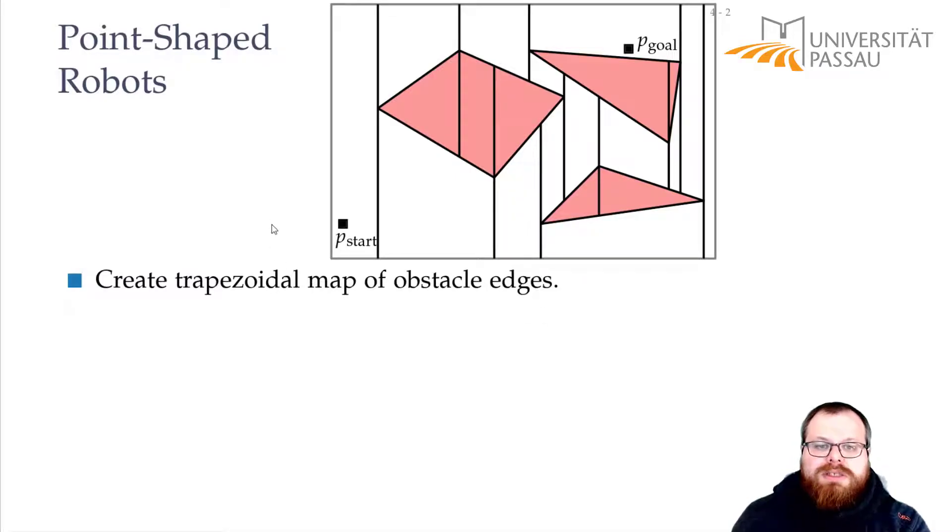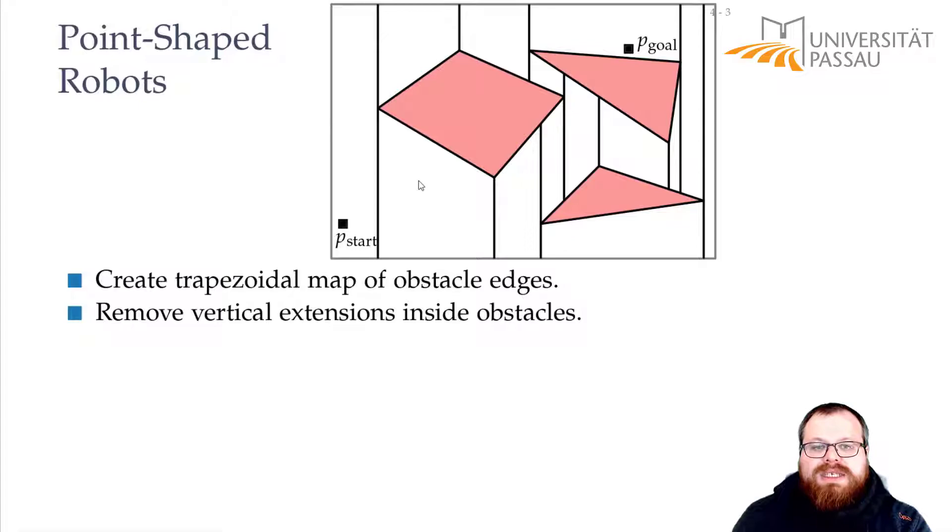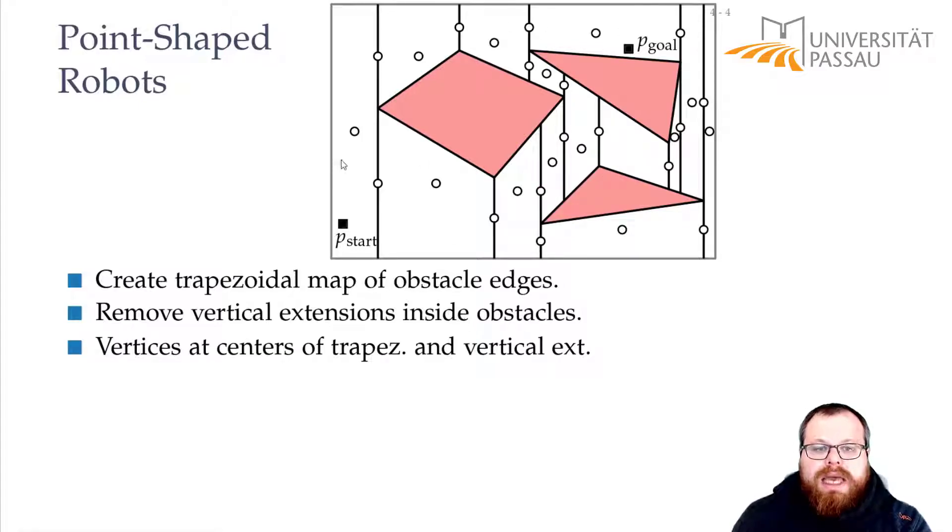And for that we use something that we already know of, which is the trapezoidal map of the obstacle edges that we used for querying the point location in a map. Of course, we don't need those edges that are inside an obstacle, so we can remove the vertical extensions that lie inside those. And now we have some trapezoids of the free map, and we can add vertices. We add one vertex for every trapezoid and one vertex for every vertical extension.